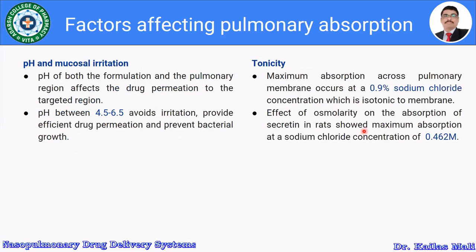The next factor is pH and mucosal irritation. The pH of both the formulation and pulmonary region affects drug permeation to the targeted alveolar region. A pH between 4.5 and 6.5 avoids irritation, provides efficient drug permeation, and prevents bacterial growth. It is necessary to consider both the formulation pH and the absorption region pH in order to avoid mucosal irritation.